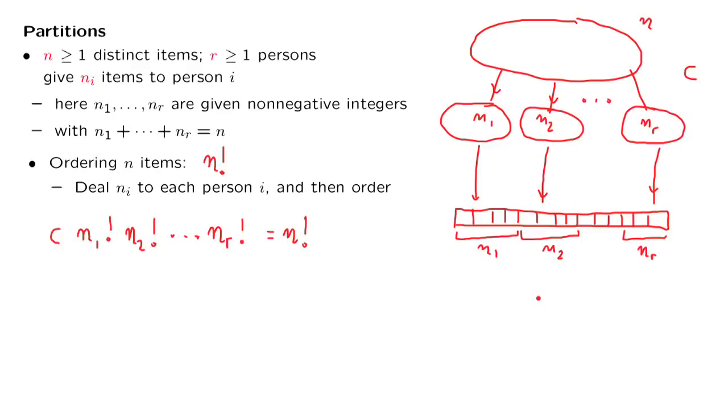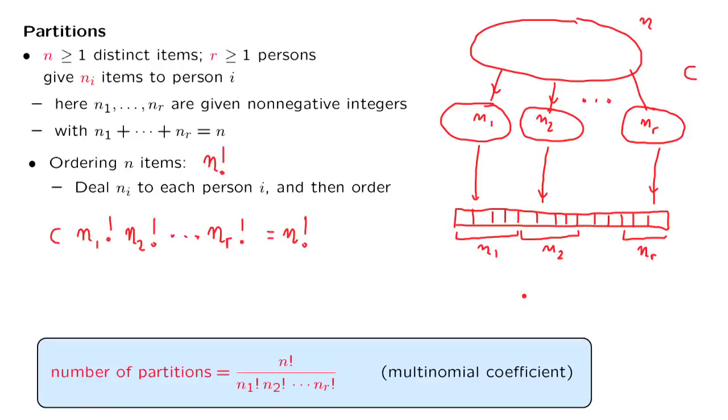We can solve this for C. And we find the answer that the number of ways that the n items can be partitioned into subsets of the given sizes is n factorial divided by the product of the factorials of the different n_i's.